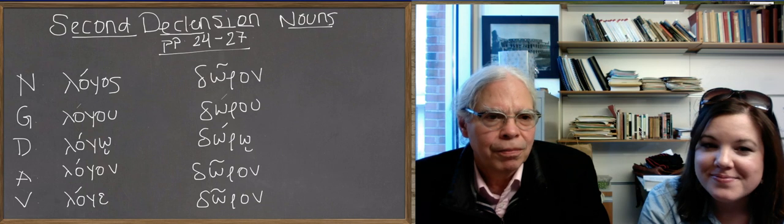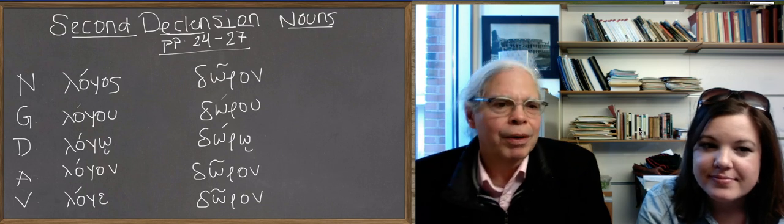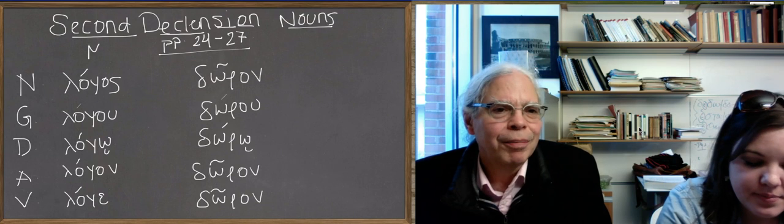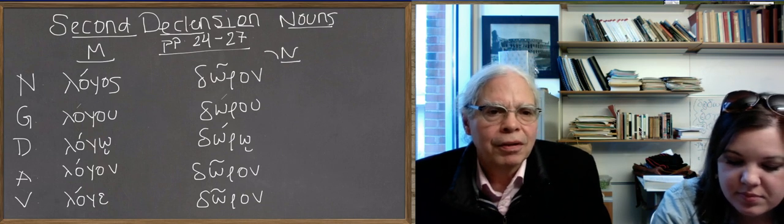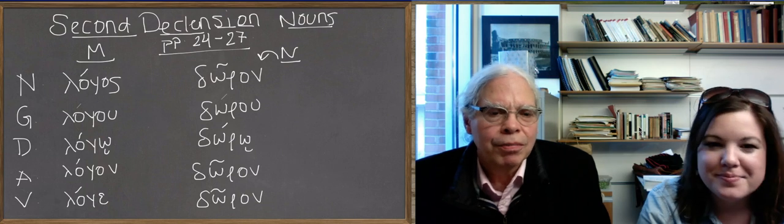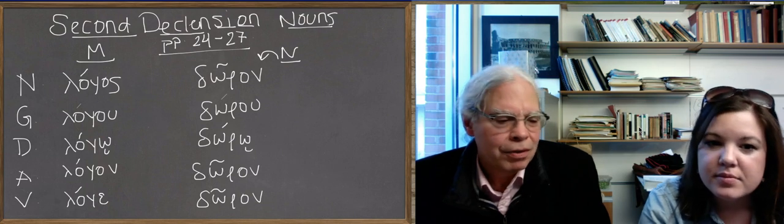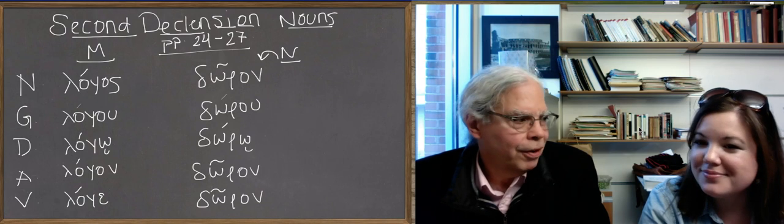The first one is masculine, logos. You might want to put an M over it for masculine. And the second one is neuter. If you have this concept of neuter, masculine, feminine, neuter means neither one or the other.